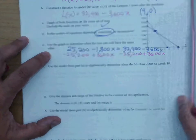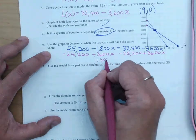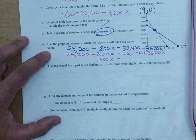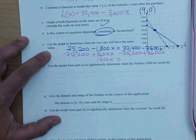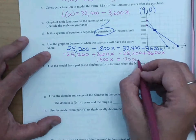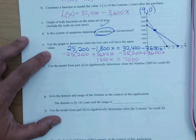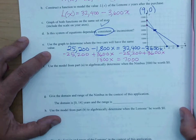So 3,600 minus 1,800 is 1,800x equals 32,400 minus 25,400. Gives me 7,000 and then I'm going to divide that by the 1,800 to get x. Oops. I must have done something wrong here.